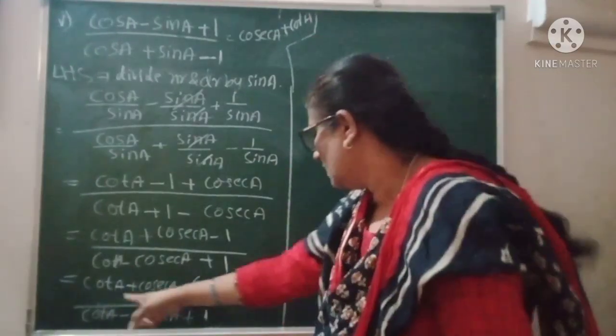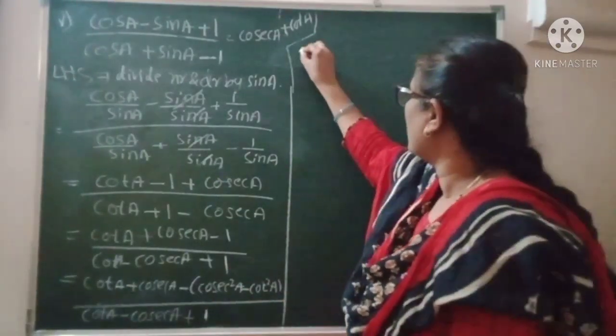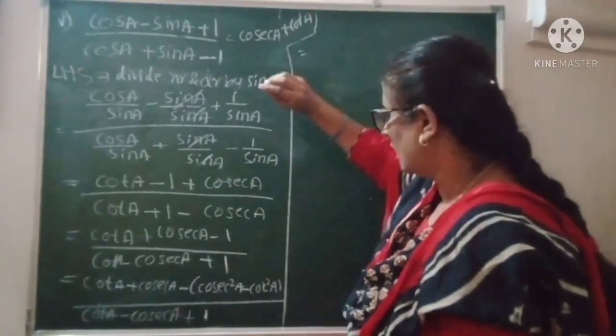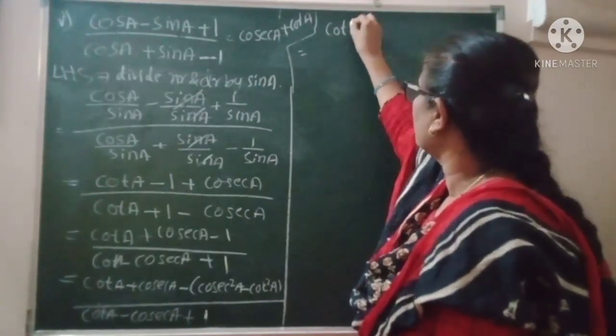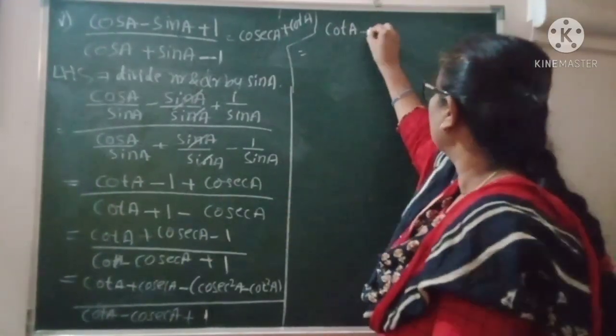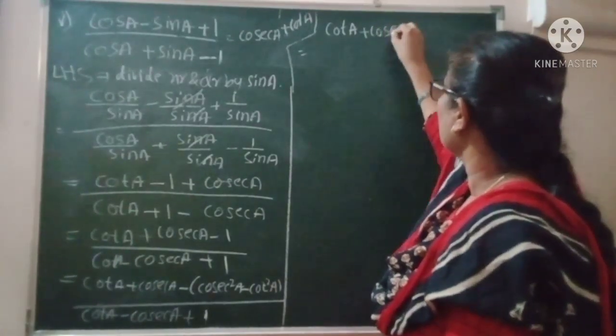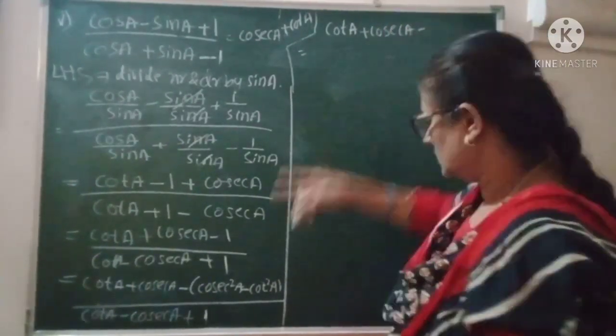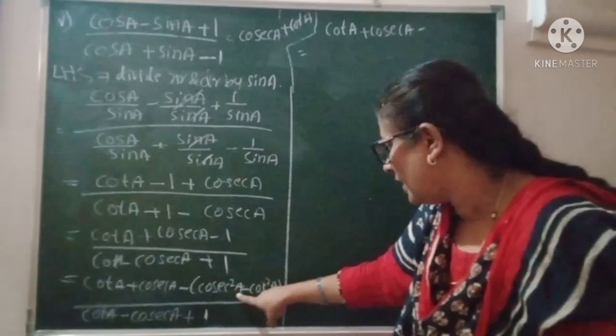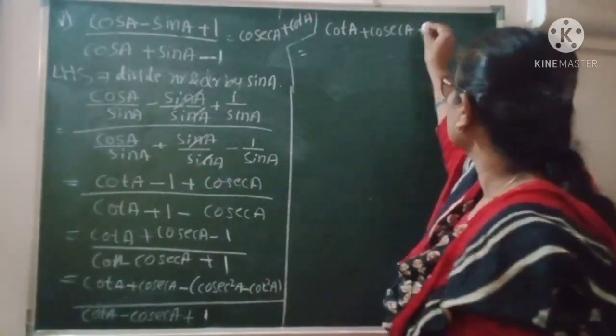Now try this one. In this problem, what we're going to do is add cosec A plus cot A